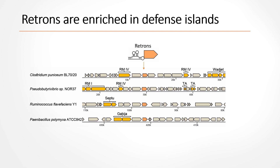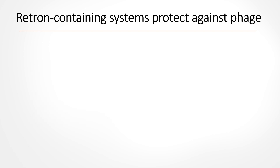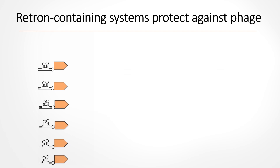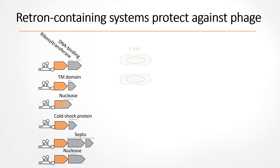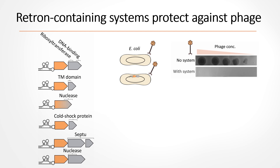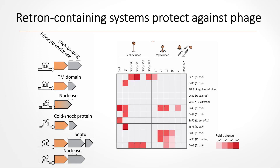I was very happy to find retrons within defense islands — I found their reverse transcriptases and non-coding RNA, which was very exciting. We also found that retrons are not standalone elements but are actually part of multi-gene systems with genes familiar from other defense systems. We decided to check whether these retrons are part of defense systems by cloning them into E. coli, infecting with an array of phages, and looking for reduced infectivity in a plaque assay. We tested retrons mainly from E. coli but also from other bacteria, and found that most of them confer defense against at least one phage.